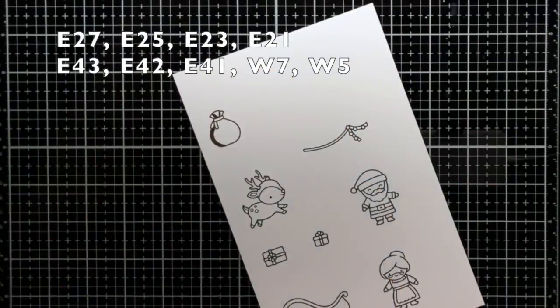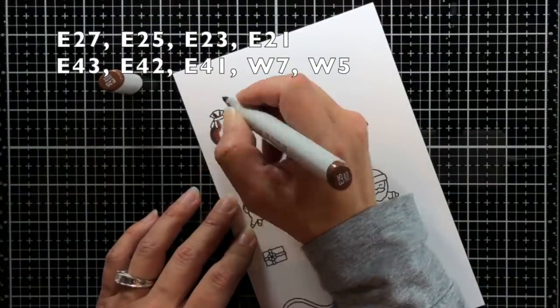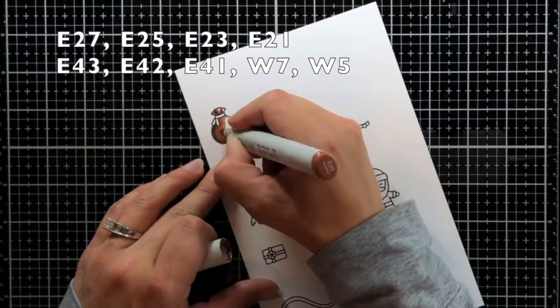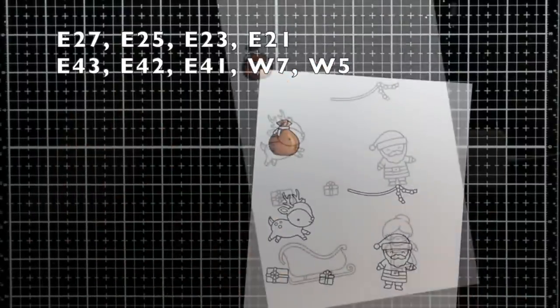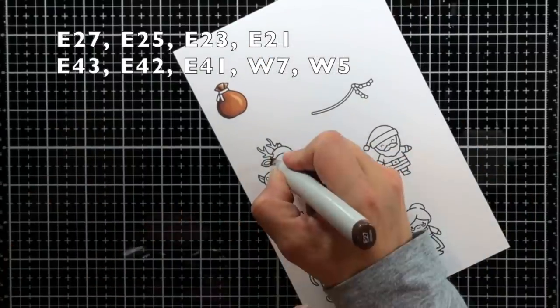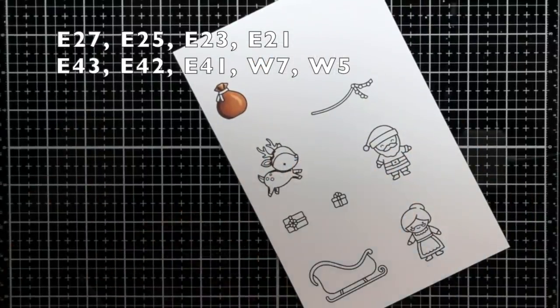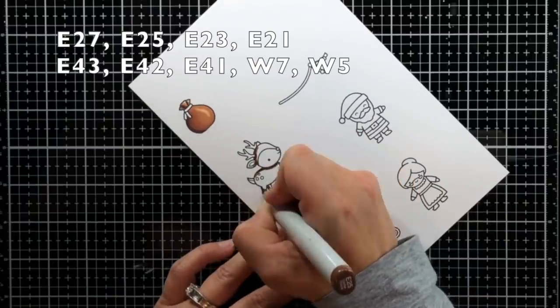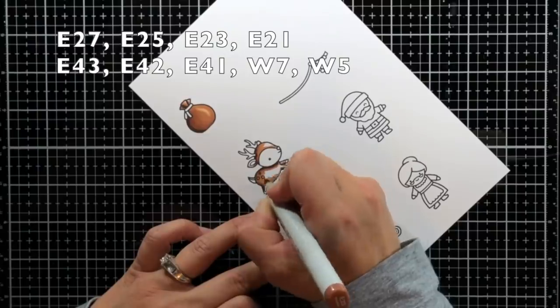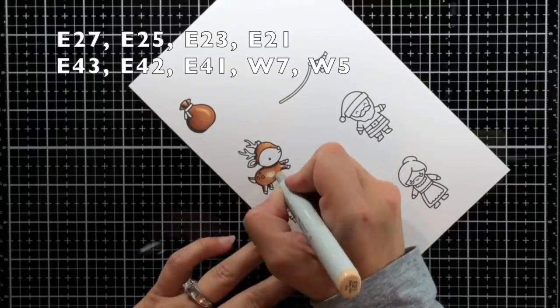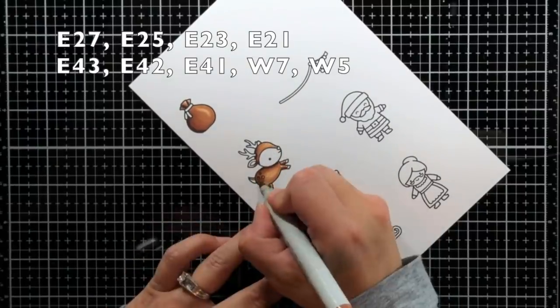I'm going to start out my card by doing some Copic coloring. I'm using the images from the Ho Ho Ho Holidays stamp set. I stamped the images in jet black ink onto Lawn Fawn's white cardstock which is great for Copic coloring. I will have all of my colors listed on the screen so if you'd like to use the same colors they will be available there for you.